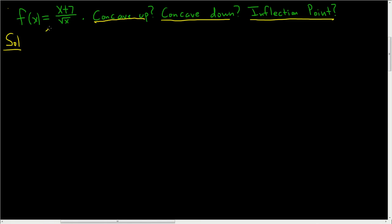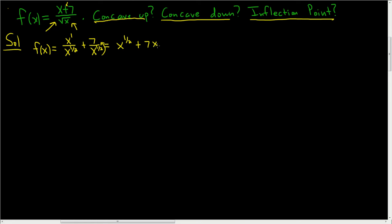We'll start first by rewriting this in a convenient way. You could just take the derivative now but it becomes a huge mess. So let's rewrite it: f of x is equal to x over x to the one-half, thinking of the square root of x as x to the one-half, plus 7 over x to the one-half. This equals x to the one-half plus 7x to the negative one-half, subtracting the exponents.